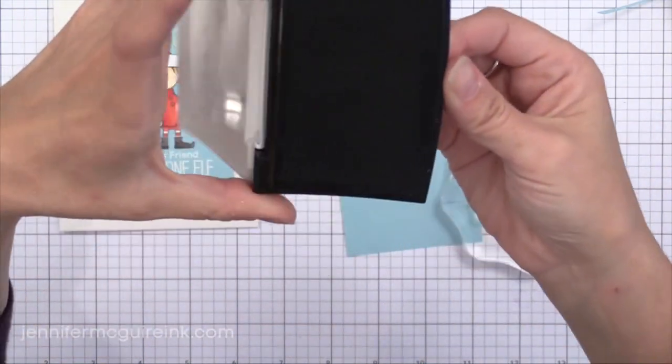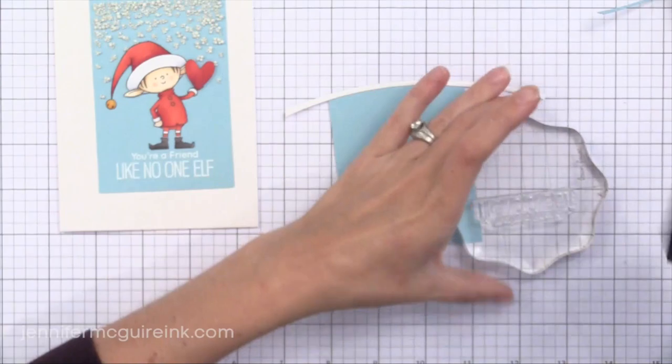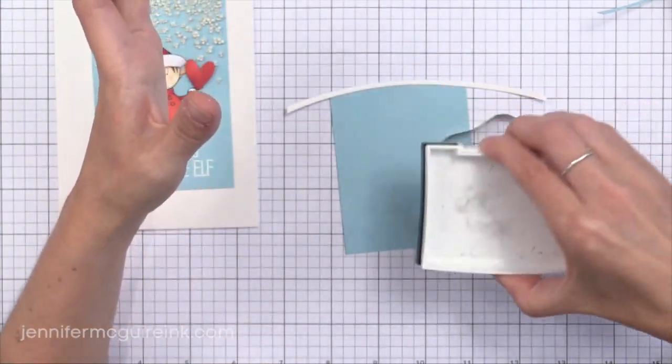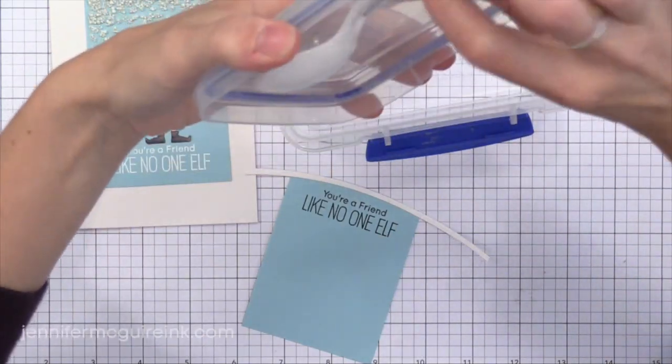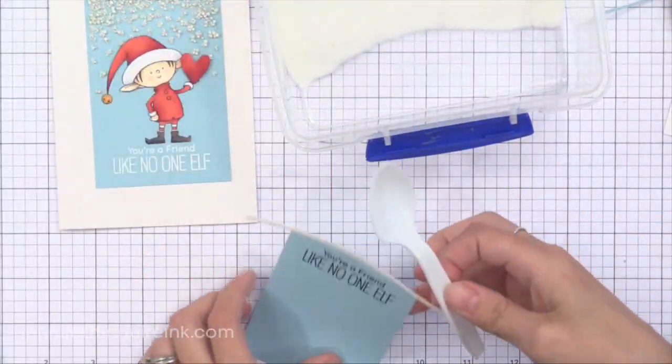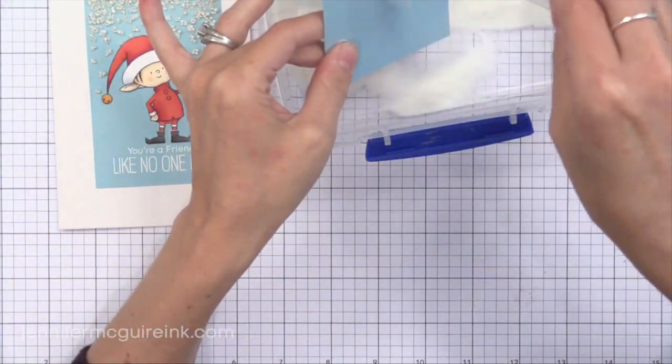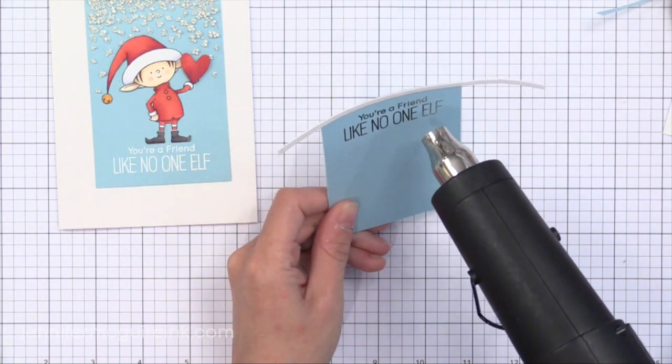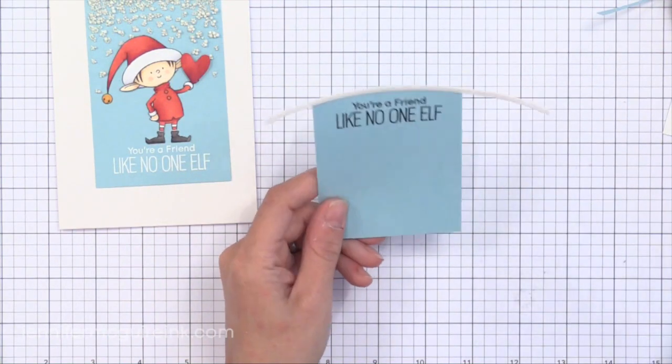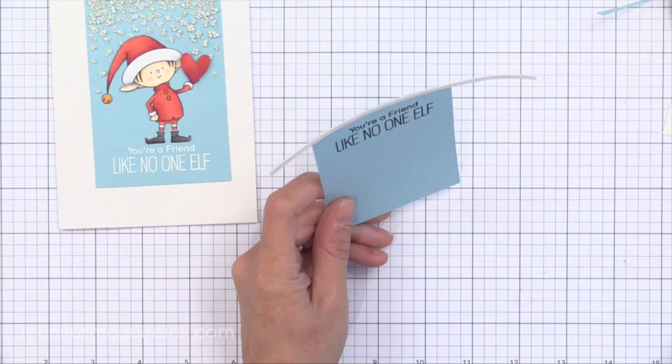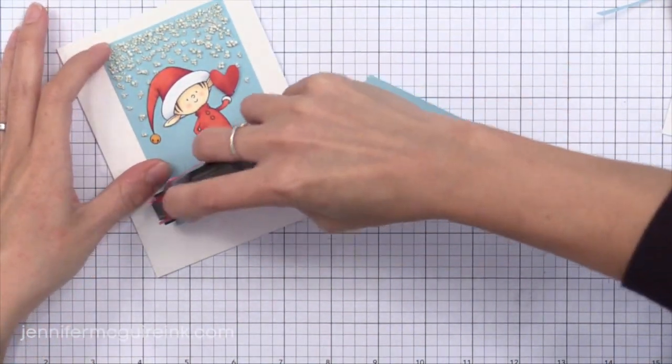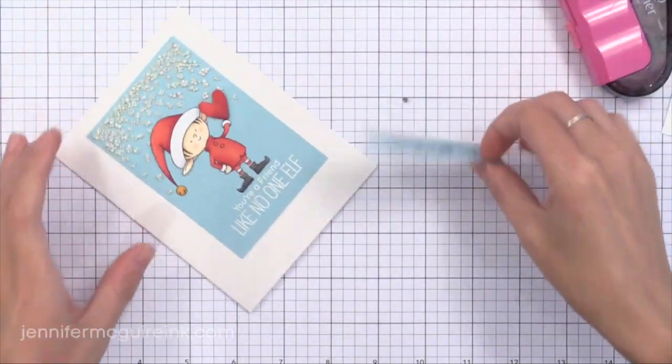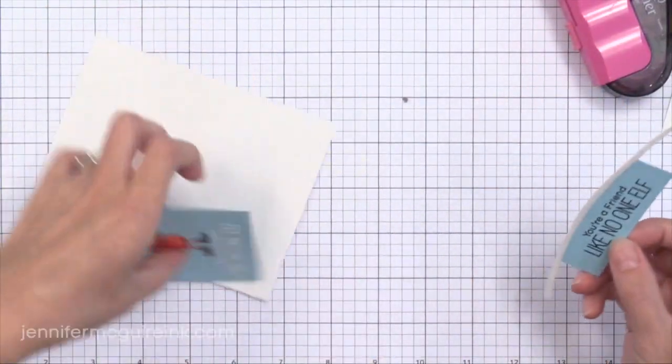So now on this piece I decided I wanted to do a black heat embossed sentiment. I thought that would stand out much nicer. So I am stamping with black VersaFine ink right underneath that white arch and then I will add clear embossing powder to give it a little bit of shine. So after heat embossing this I can cut the bottom off and we're ready to put this on top of the white heat embossed image. So we're completely going to hide it. Putting adhesive right over that sentiment. Pop my new piece on and nobody will ever know.